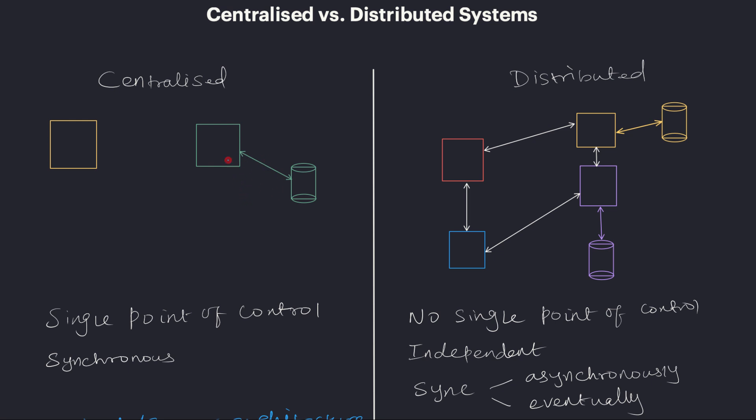And usually the communication between these two will be synchronous. For example, this will be like a client server system. The website will make a call to the database and the database will act accordingly based on that call. So this type of system is also called centralized system.